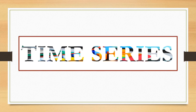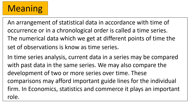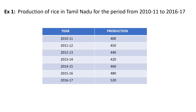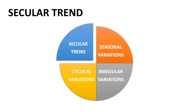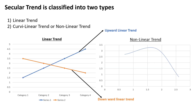Hello everyone, welcome to our channel. In the previous videos we have seen the components of time series — the first one is secular trend. So today we are going to see how to measure the secular trend. Secular trend is classified into two types: linear trend and non-linear trend. Today we are going to learn how to measure this linear trend and non-linear trend.